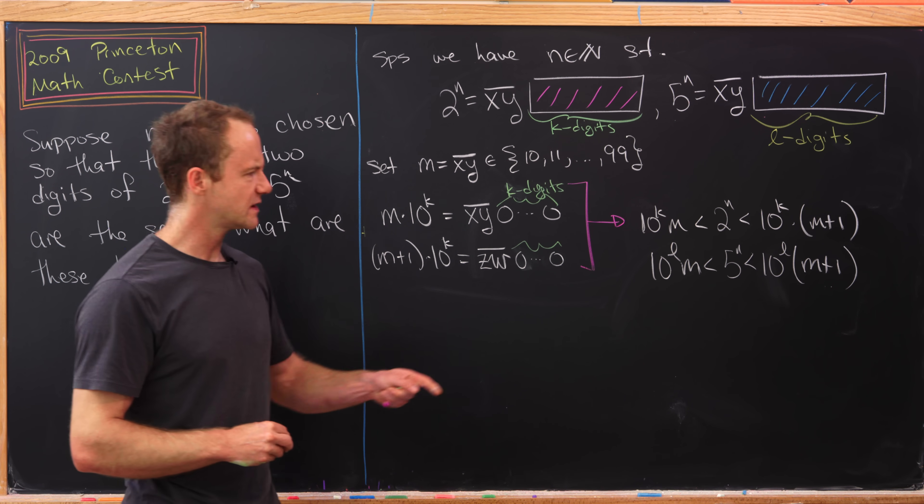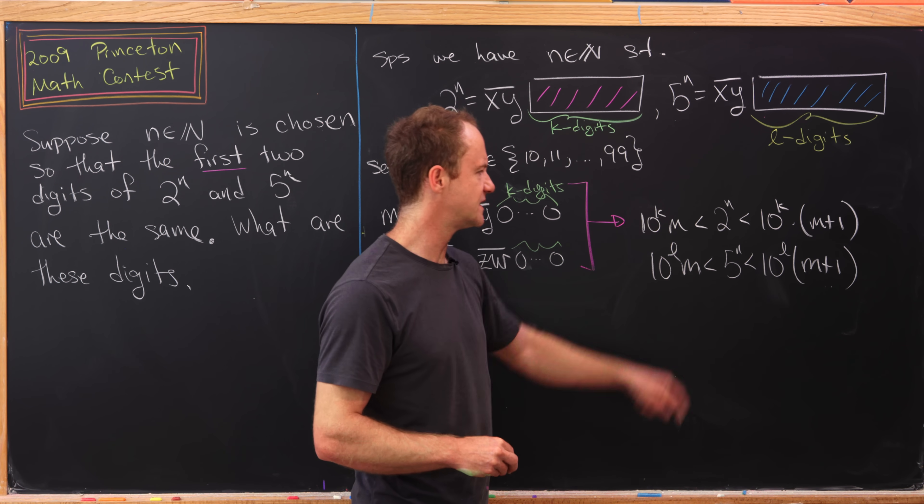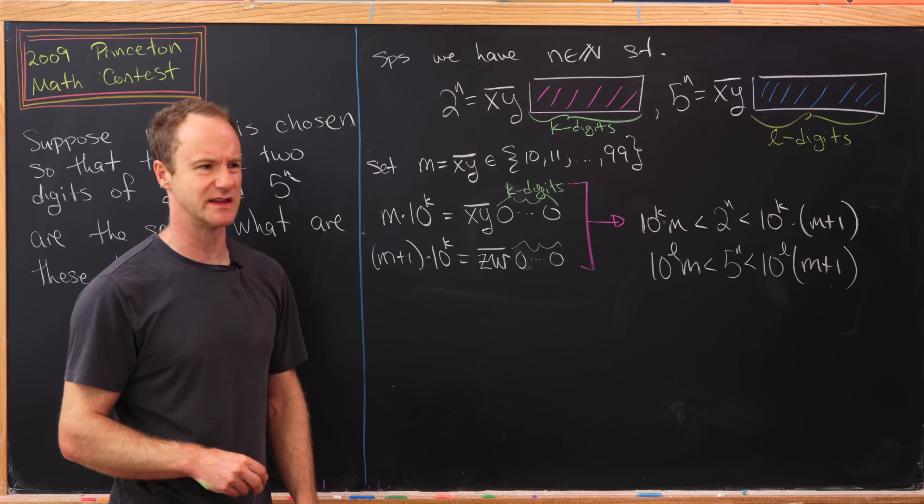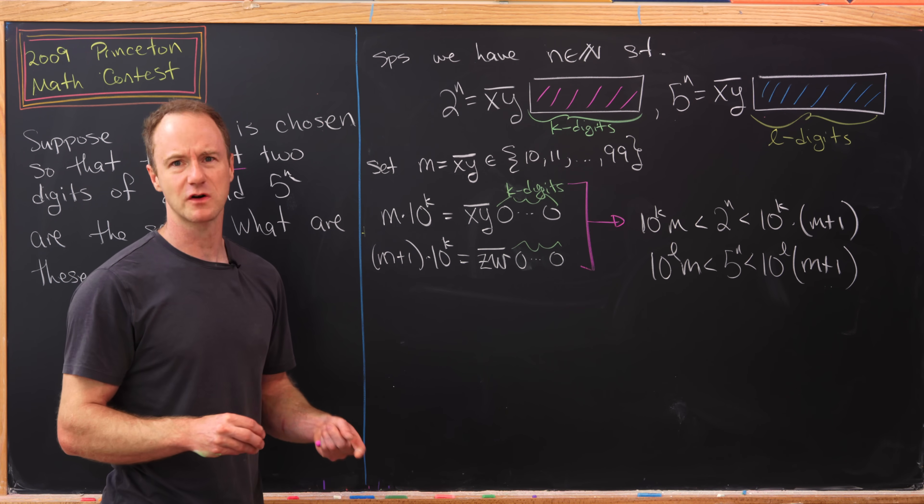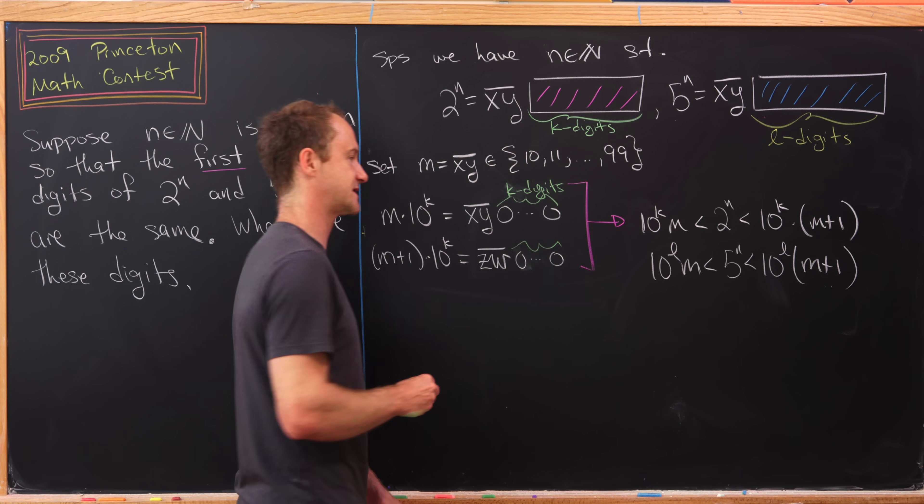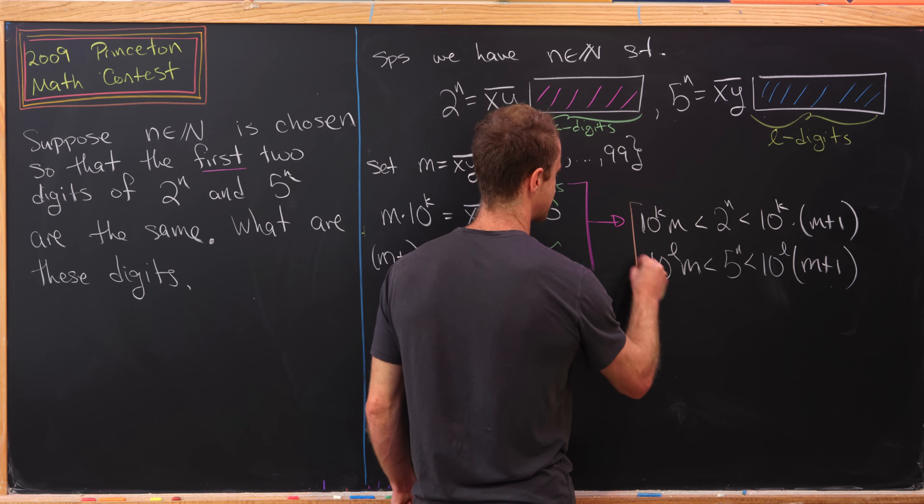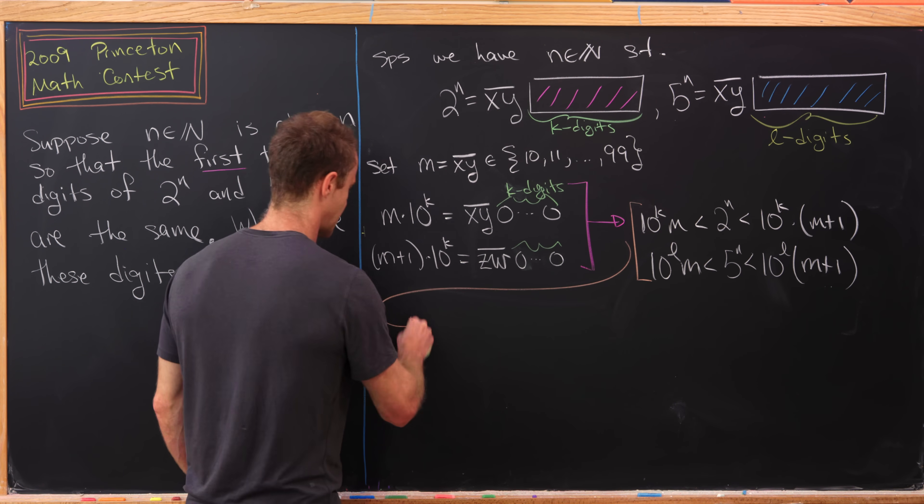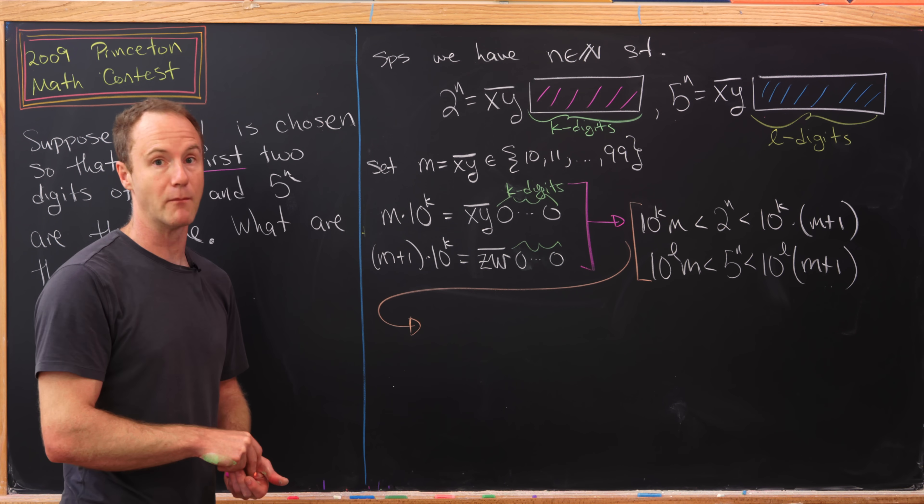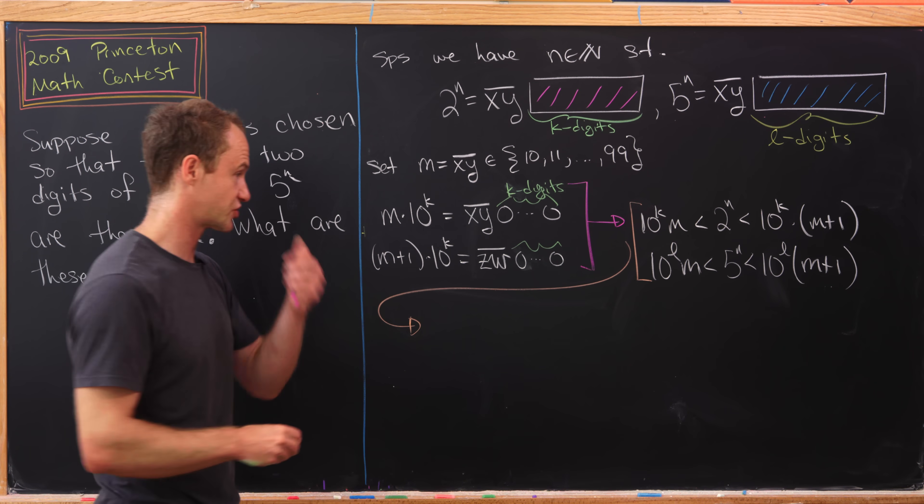Now let's notice that if we multiply 2^n and 5^n we would get 10^n. Then we would have powers of 10 all over the place, and maybe that would be easy to work with. So let's multiply those inequalities straight down.